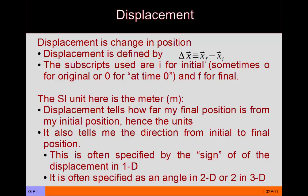The triangle symbol is the Greek letter delta, which represents 'change in.' The triple bar means 'defined by' — so it is equal to, but it's a logical definition. I will usually use subscript I for initial (sometimes O for original, or zero for time zero) and F for final. So X with an arrow and subscript F means the final position of the object.